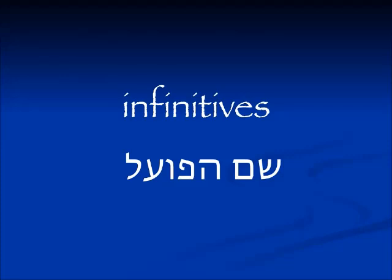An infinitive in English just has the word 'to' before it: I want to go, to see, to eat. We have the same form in Hebrew.